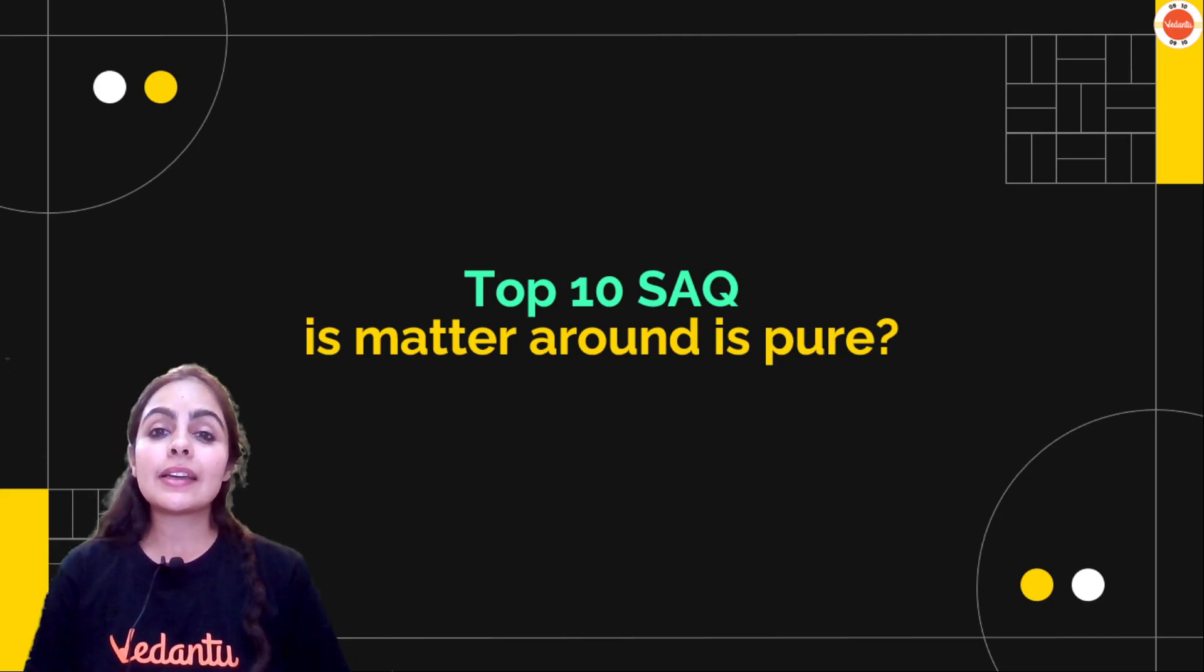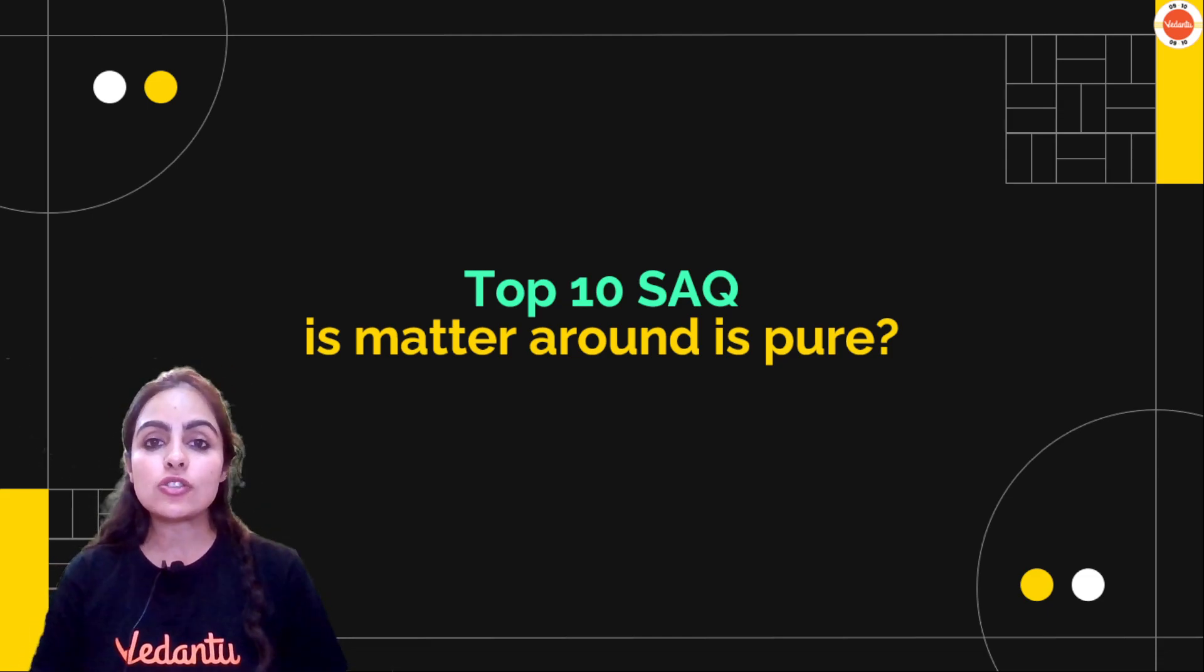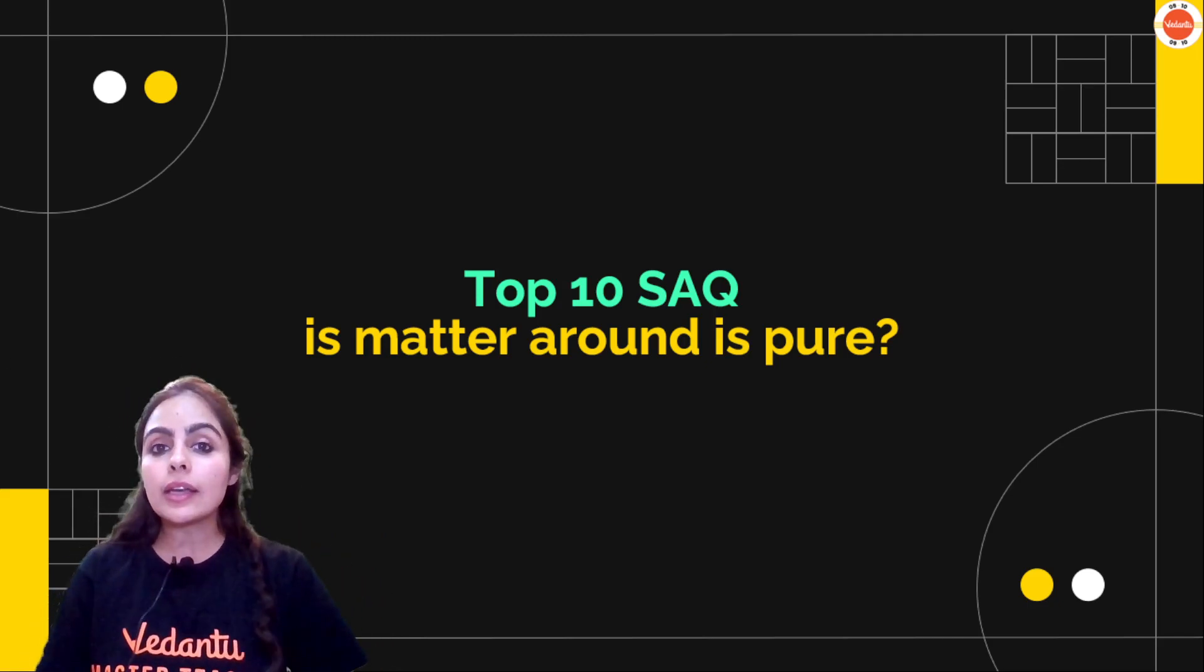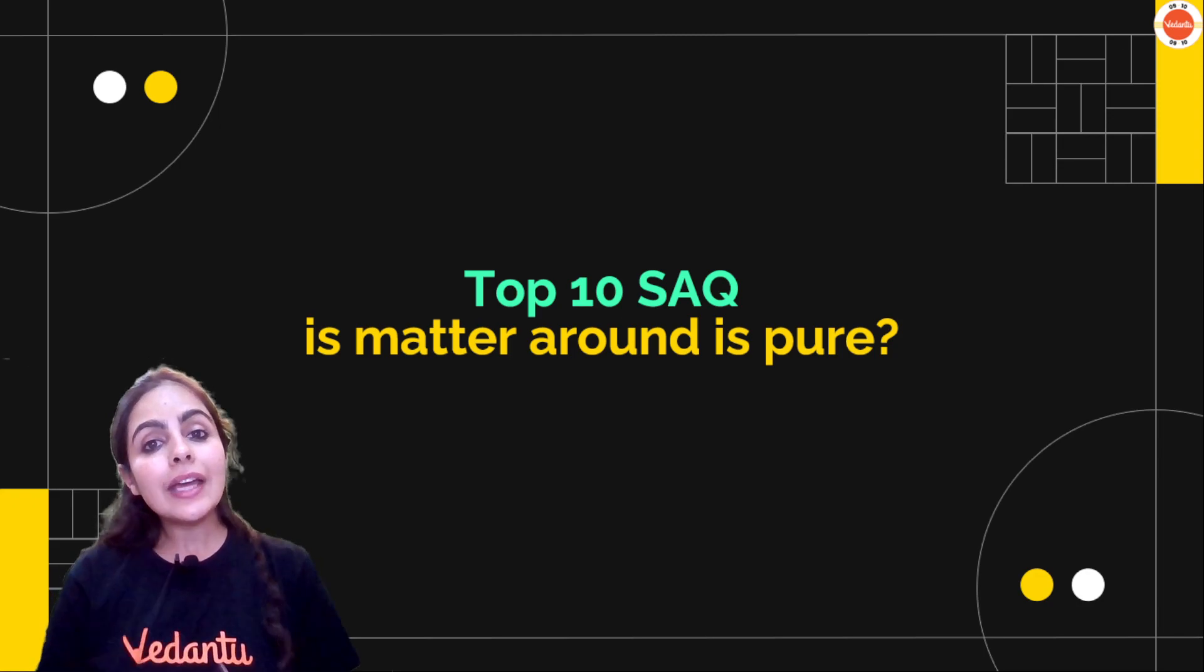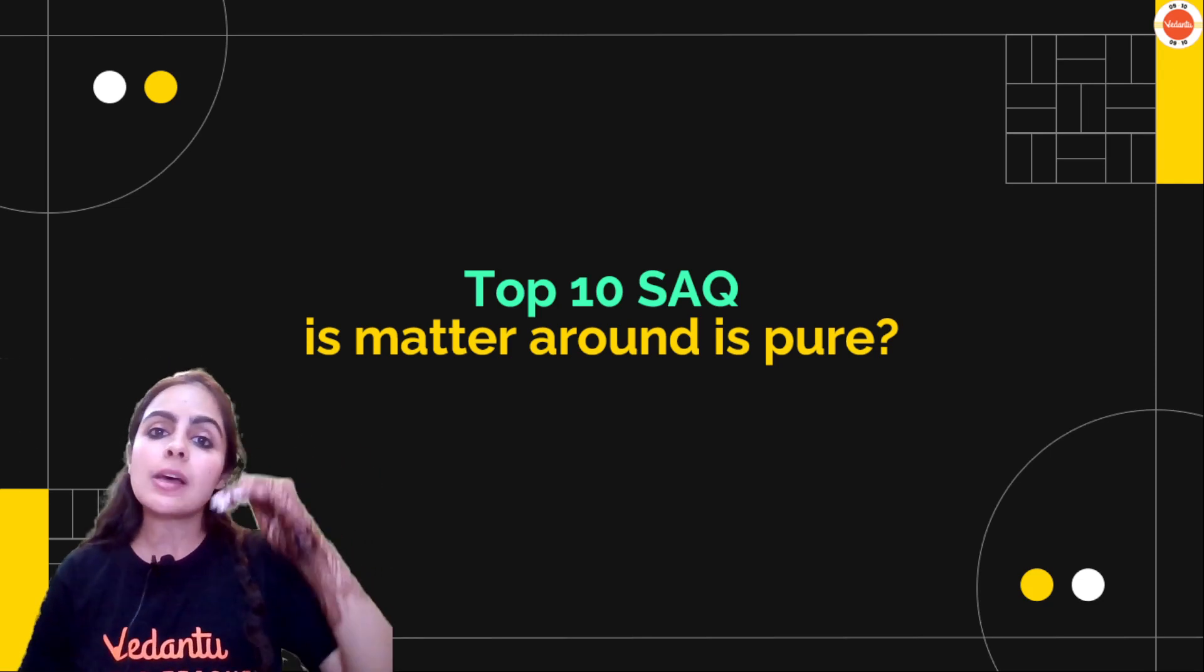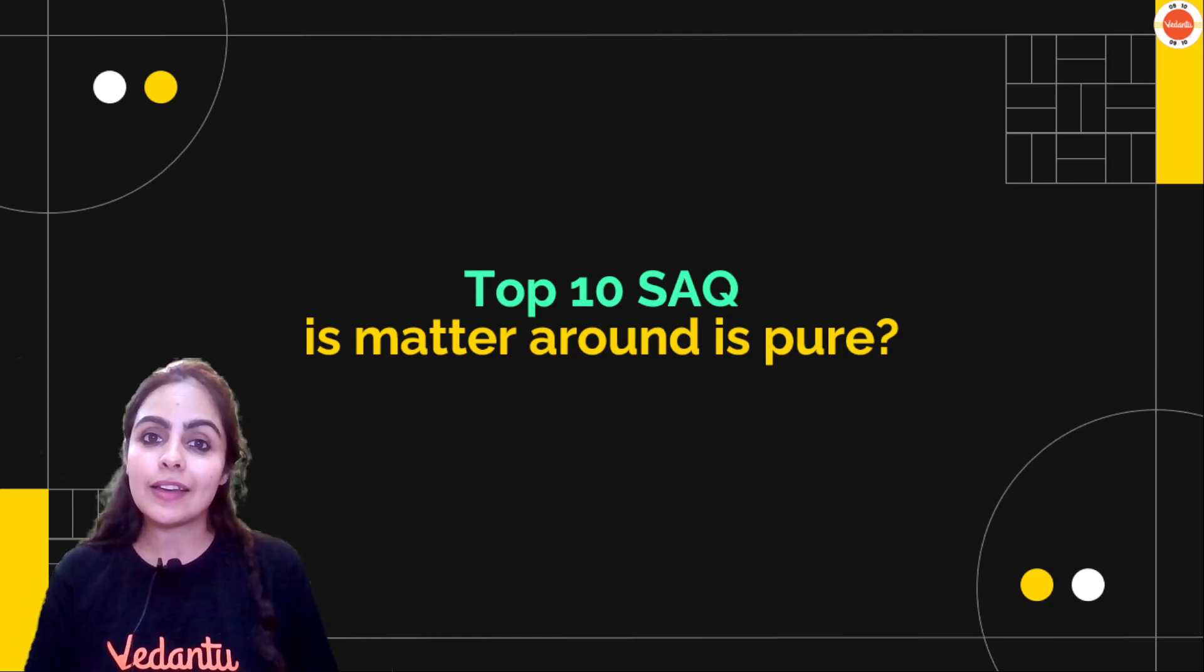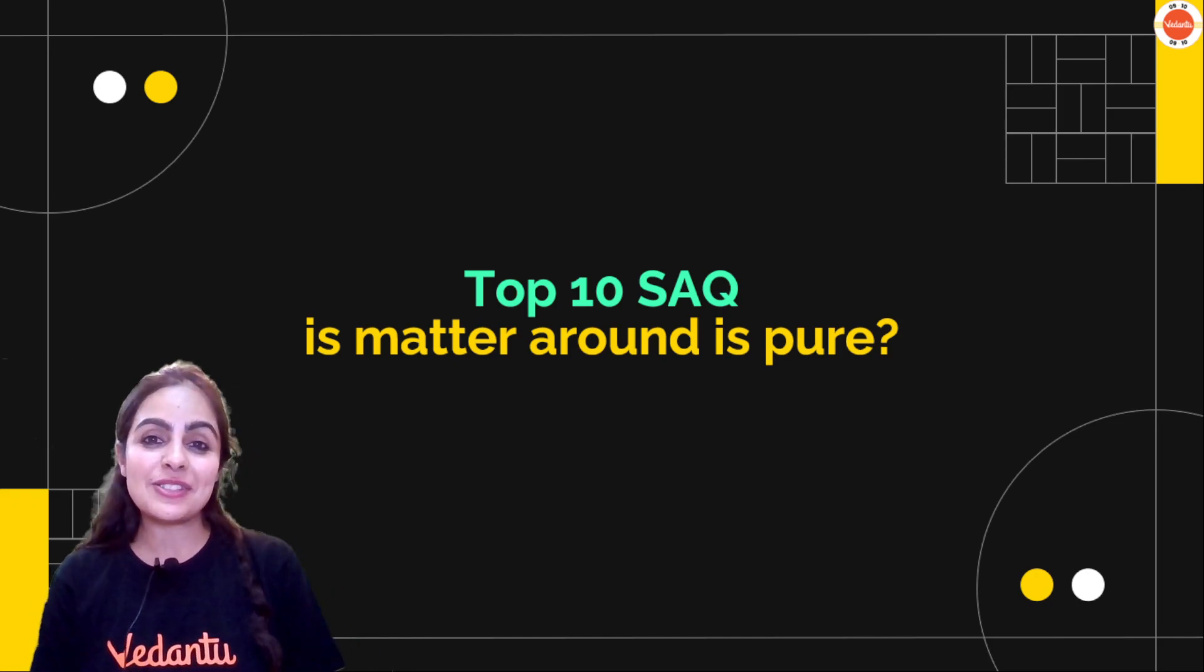So let's talk about top 10 short answer questions of Is Matter Around Us Pure. SAQs means short answer questions - those 2 mark questions, or 5 mark questions that can come in subparts. These types of questions can come in subparts. So I hope you all are ready to solve some chemical problems. Are you ready?